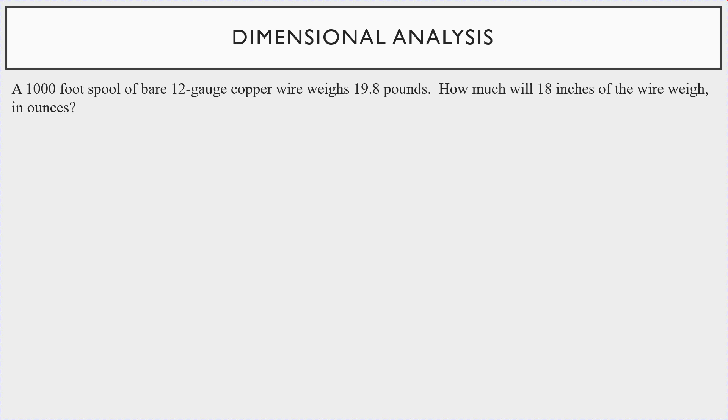So look. Start with, it's asking you how much will the wire weigh in ounces? So the final answer is going to be in terms of ounces. So start with that. You have 18 inches. You're going to multiply this by. Well, look, this is in feet. So the first thing you're going to multiply is by one foot is how many inches? Well, we know that's 12 inches. So look what's canceling out. Inches, inches. Now we need to cancel out feet. Well, look at the ratio I have here. A thousand feet. How much does it weigh? It weighs 19.8 pounds. So feet are going to cancel out.